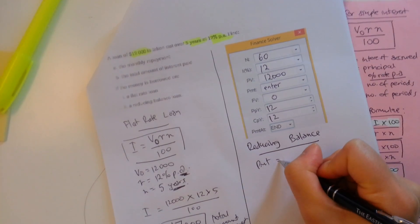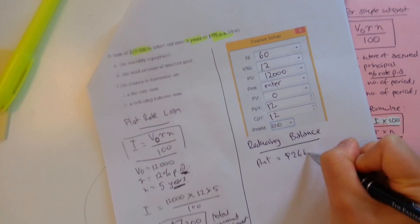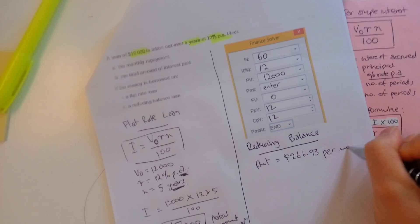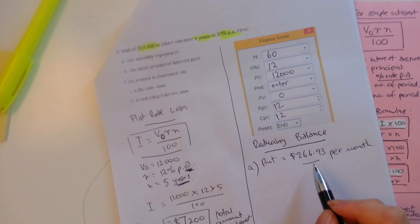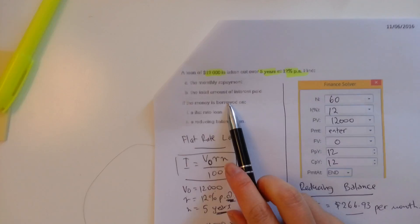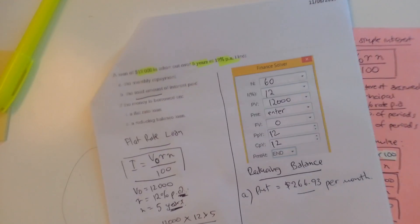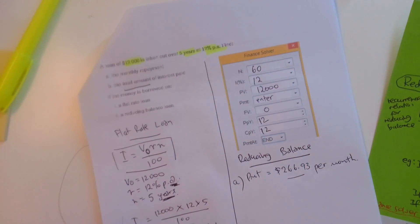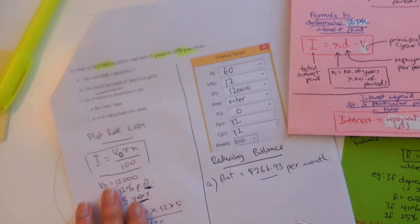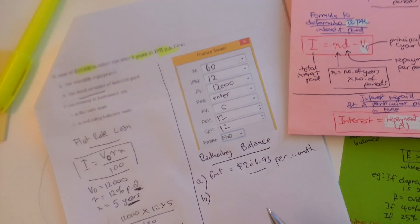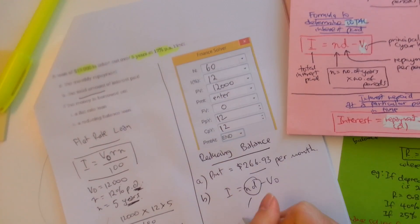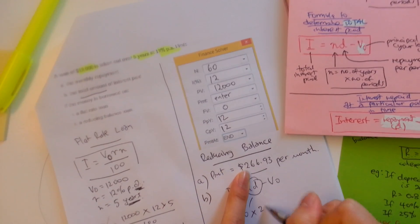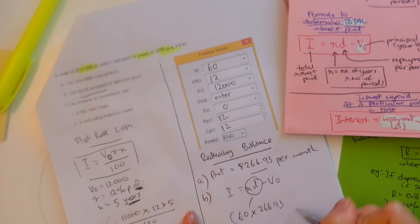So that's A. That's how much we have to pay for every month for five years. The total amount of interest paid. Remember, this rings a bell. Total amount of interest would be your total interest formula, which is that one there. So, without further ado, let's just use that formula to calculate the second part of the question. N is 60. We are making 60 repayments of $266.93. And then we're going to subtract it.